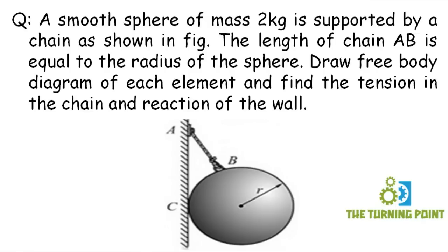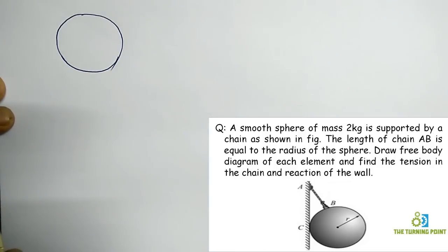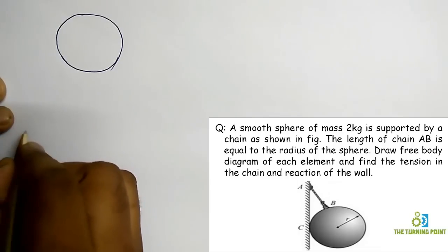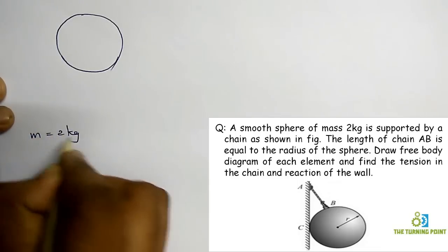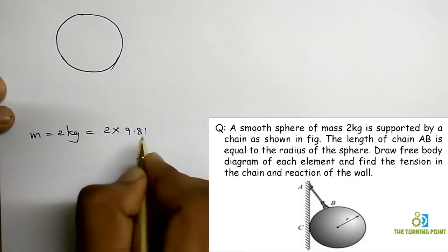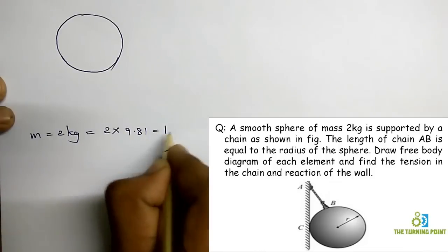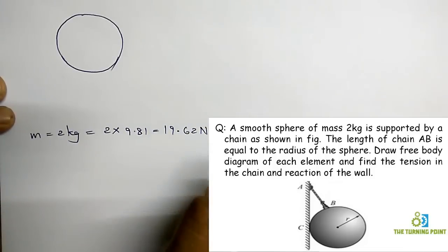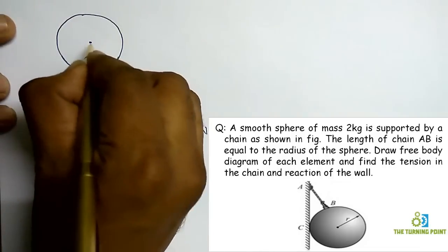So now I will draw the sphere first. So this is the sphere. The first thing I have to represent is weight. So weight acts vertically downwards, mass is given there. So first you need to convert that mass into weight. So mass is given as 2 kg. So if you want to convert that one into weight you have to multiply that one with 9.81 meter per second square. So then it will be 19.62 Newtons.